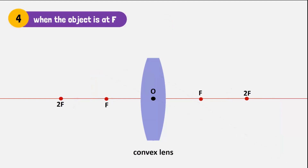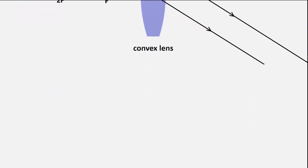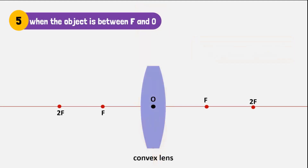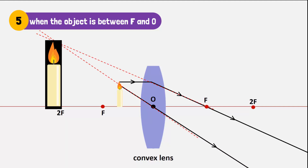But what if the candle is placed at point F? The rays of light will become parallel after refracting through the convex lens and will form an image at infinity. The image is real, inverted, and greatly magnified. Placing the candle any closer will result in the rays diverging as they refract through the lens, forming a large image that is virtual and behind the lens.